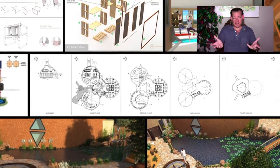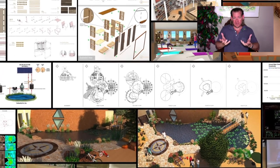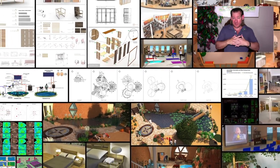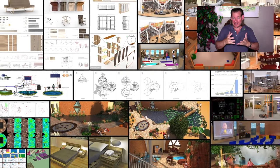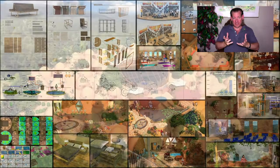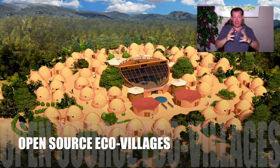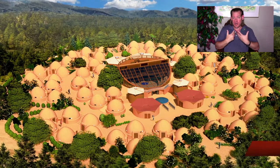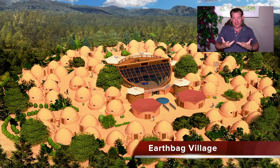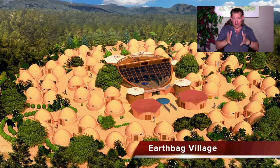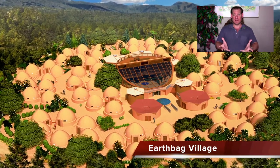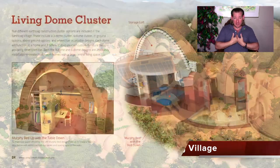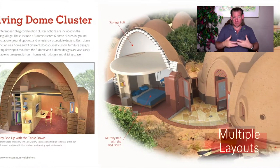Creating enough of these around the world so that everybody who wants to can participate and become a part of it. As a residual, everybody who doesn't want to has access to the foundational — what we call highest good — tools and resources to implement in their own lives, so that people can just start making a difference in their own abundance and sustainability on an individual level, even if they don't want to participate in the community and world change model that is One Community.